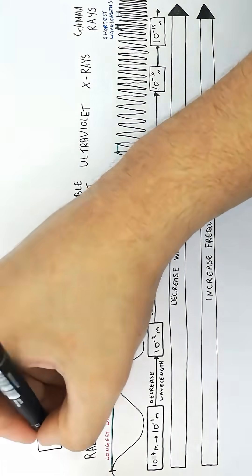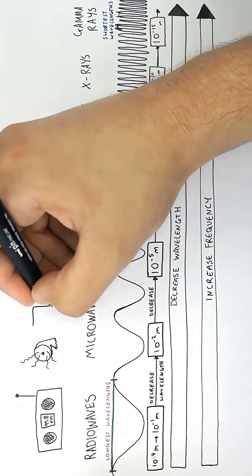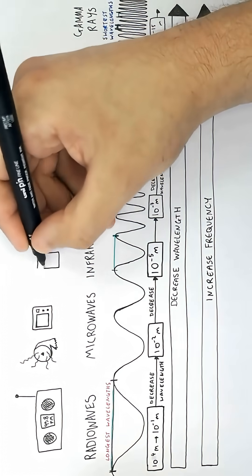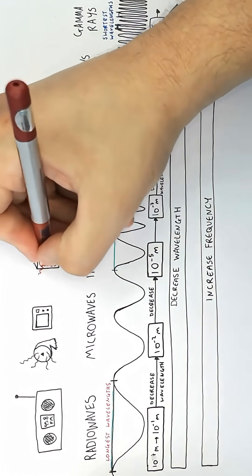Radio waves are used to transmit radio signals. Microwaves are used in satellite communications, as well as cooking by using microwaves in the kitchen. One of the uses of infrared radiation is going to be in heaters, so you can have infrared heaters in the house.